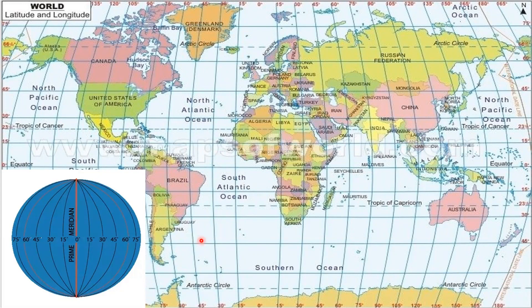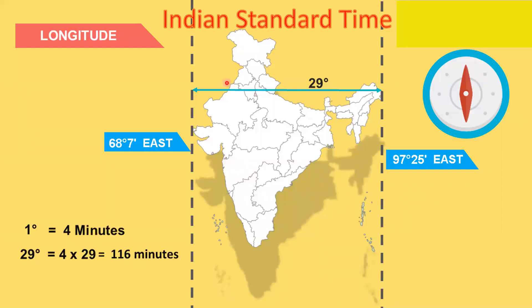Now let us see the map of India. This map clearly shows the longitudinal extent of India. It extends from 68 degrees 7 minutes east to 97 degrees 25 minutes east. That is, India has spread across approximately 29 to 30 degrees of longitudes, which means India spans across two standard time zones.